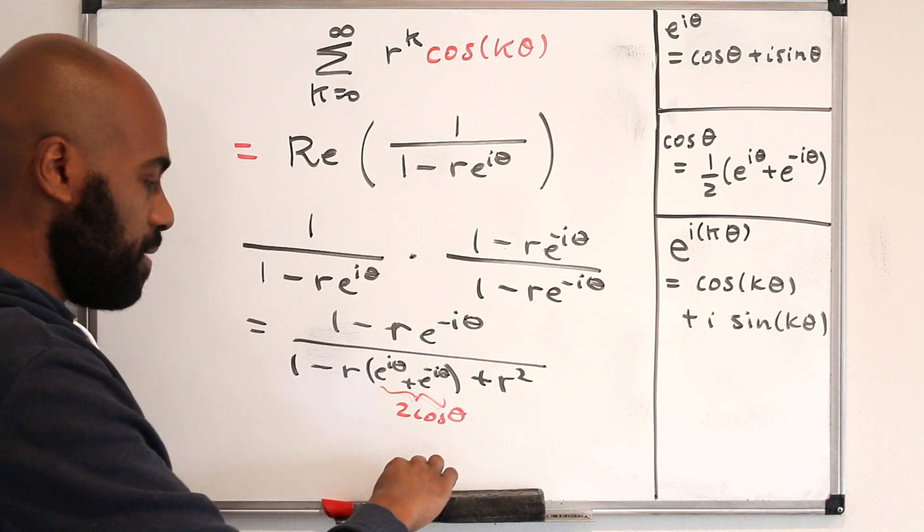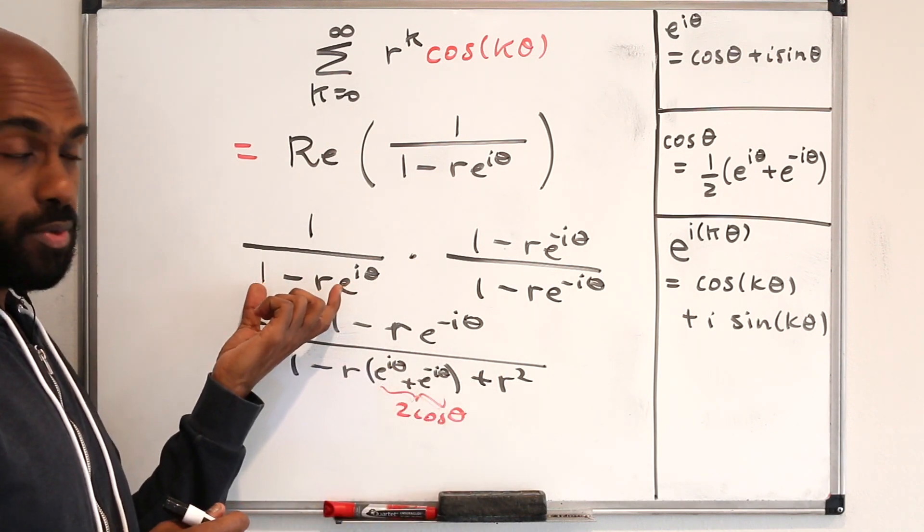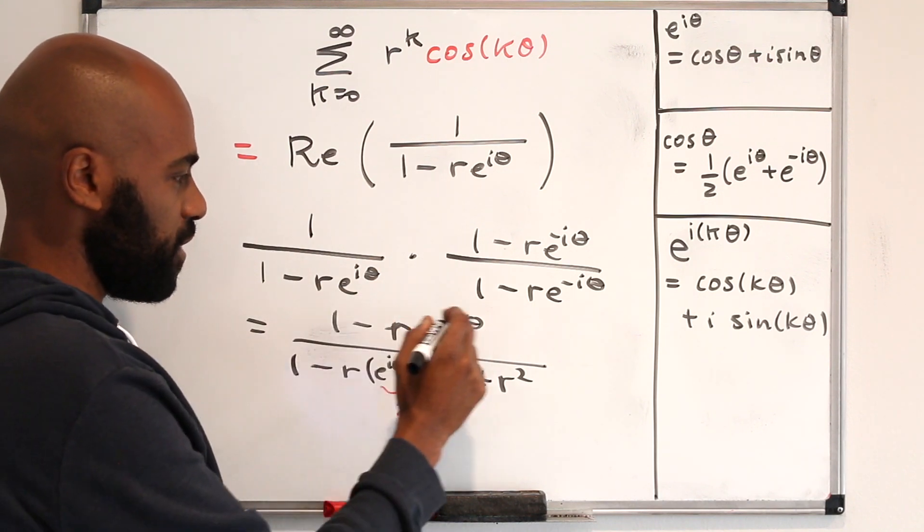All right, so it makes sense that our denominator now is a real number because we took a number that's complex and multiplied by its complex conjugate. Now the question is what's going on with the numerator?